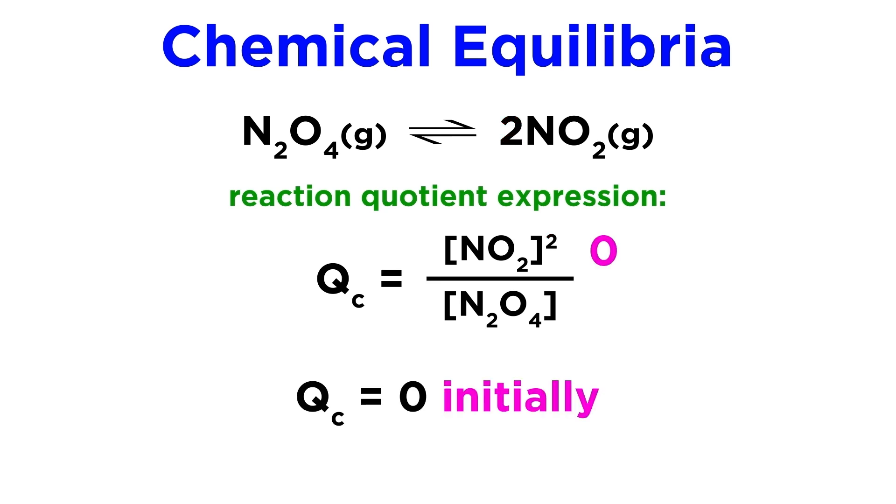It is important to understand that when a reaction begins, Q will be zero, since there will not yet be any products, and it will begin to increase as products are formed. But Q will eventually become constant once equilibrium is reached, as concentrations will become constant at that point, and once that happens Q becomes equal to the equilibrium constant of the reaction at that temperature.